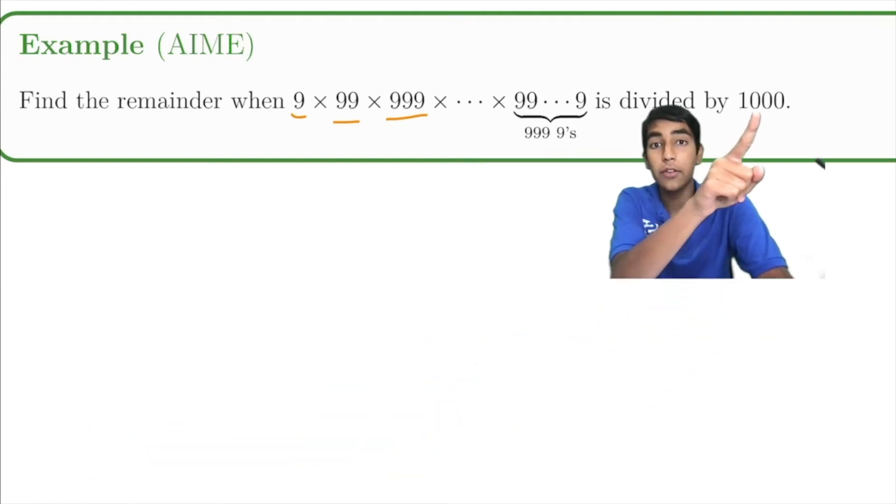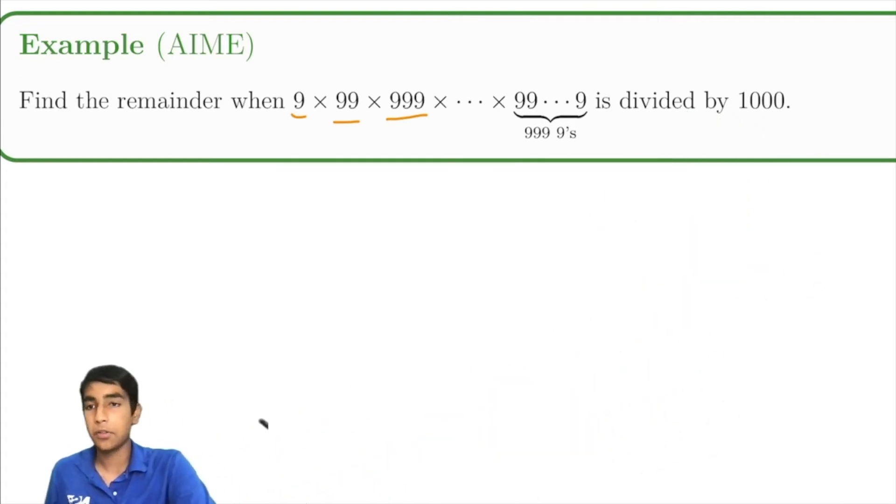The key thing here is we don't want the value of this whole expression. We just want the remainder when it's divided by 1,000 right here. This is all we care about. We don't care about anything past the last three digits.